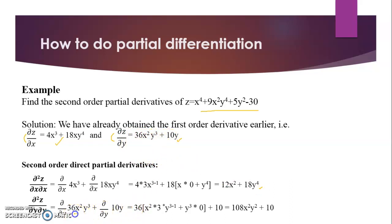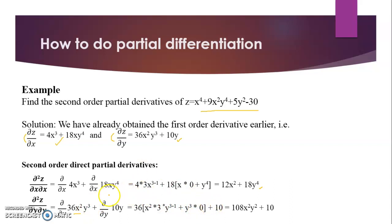For the direct second-order partial derivative with respect to Y, we differentiate 36X²Y³ + 10Y. For 36X²Y³, using the product rule with 36 as common: X² times derivative of Y³ (since it is with respect to Y) = 3Y², plus Y³ times derivative of X² which is constant = 0. For 10Y, the derivative is 10. So ∂²Z/∂Y² = 108X²Y² + 10.